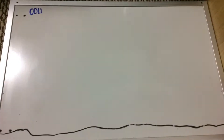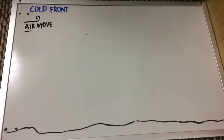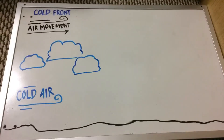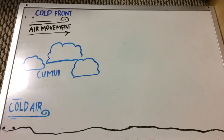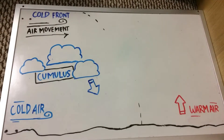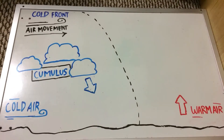Now it's time for the cold front. A cold air mass bumps into a warmer air mass. The cold air stays near the ground and pushes underneath the warm air, causing it to rise. The slope of cold air is very steep, which makes the warm air rise vertically. When warm air rises, it cools and water vapor creates cumulus clouds.